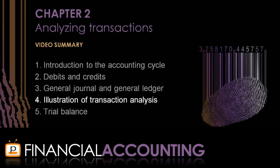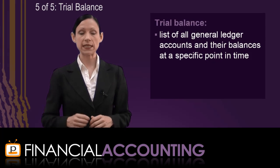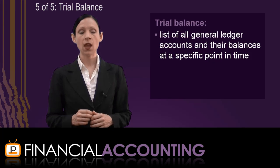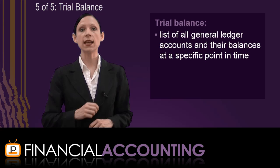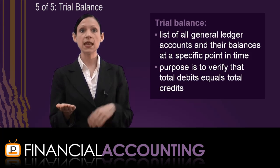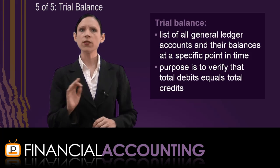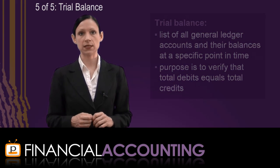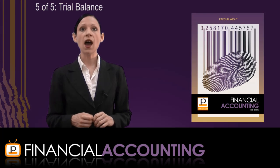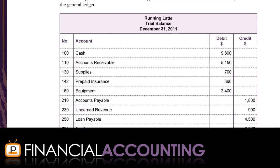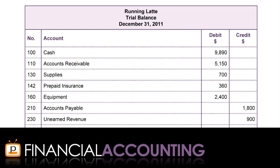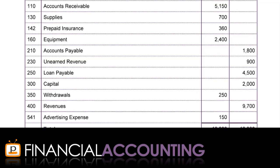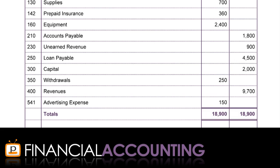Once transactions have been journalised in the General Journal and posted to the General Ledger, we are ready to prepare the Trial Balance. The Trial Balance is a list of all General Ledger accounts held by the business and their balances at a specific point in time. We prepare it to verify we have not made any mistakes in journalising and posting, by checking that total debits equals total credits. While this will not identify all types of errors, it can identify some common ones which we can correct before preparing the financial statements. We can see all account numbers, account names, and their debit or credit balances in the Trial Balance. Because total debits and total credits are equal, this Trial Balance is said to be balanced and can be used to help prepare the financial statements.